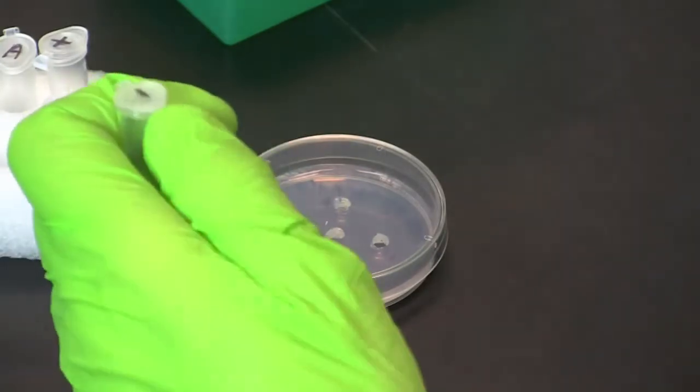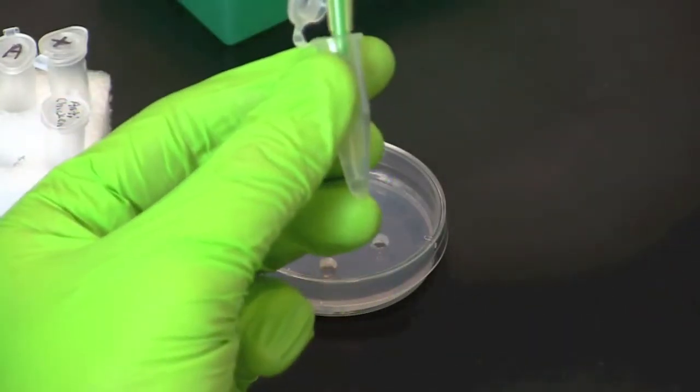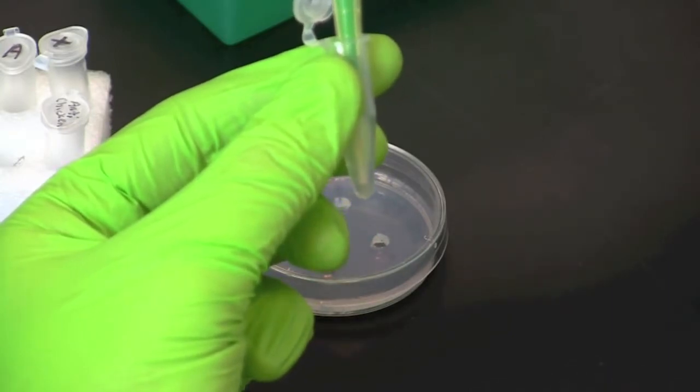Again, using a clean pipette tip, pipette 15 microliters of negative control into the hole labeled minus.